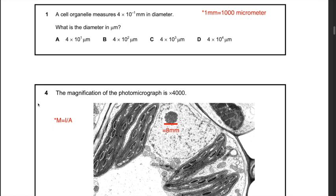Question 5: a cell organelle measures 4 × 10⁻¹ millimeter in diameter. What is the diameter in micrometers? A key thing to remember is that 1 millimeter equals 1000 micrometers. The answer will be 4 × 10⁻¹ × 10³ (times 1000), which gives 4 × 10² or 400 micrometers. Hence the answer is B.